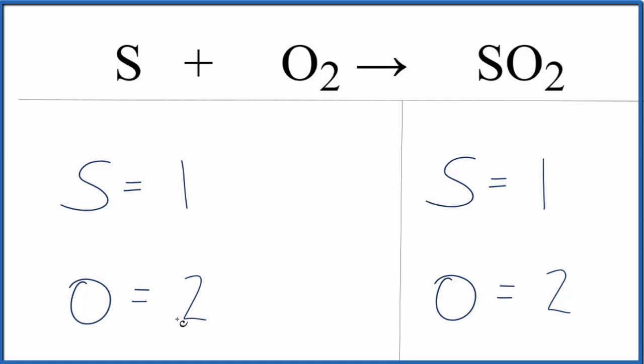Oxygens, we have two. Over on the product side, we have two. Those are balanced. So everything's equal.